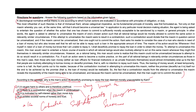Hence, options 1, 3, and 4 cannot be judged correct on the basis of the question. Option 2 is the suitable answer, which points to why the man's action of deceitfully promising to repay the loan is deemed morally unacceptable. Option 2 gives the correct reason, and hence answer option 2 will be the clear answer. Hope you understood this. That's all.